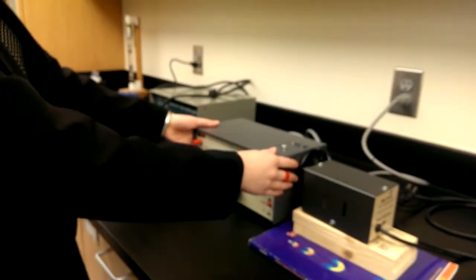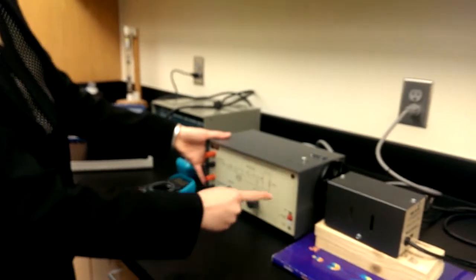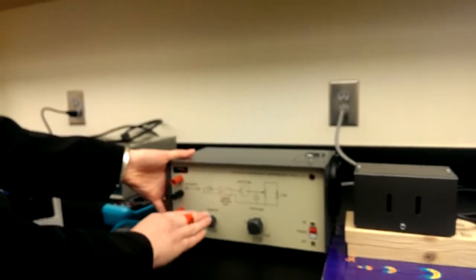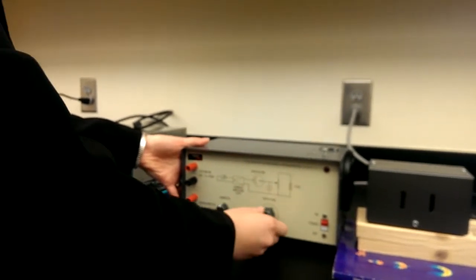Now this is the bulk of the apparatus. There's a diagram on the front to help you see what's going on, but this ammeter knob is just an ammeter offset, and then this actually controls the voltage that will be going to the phototube.